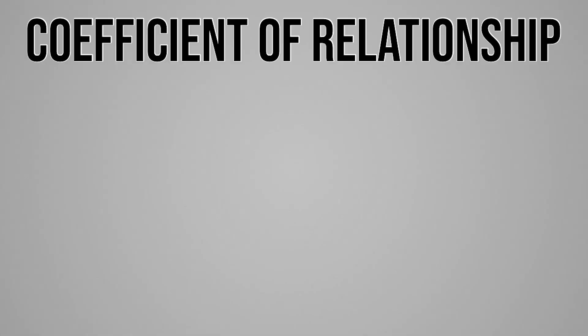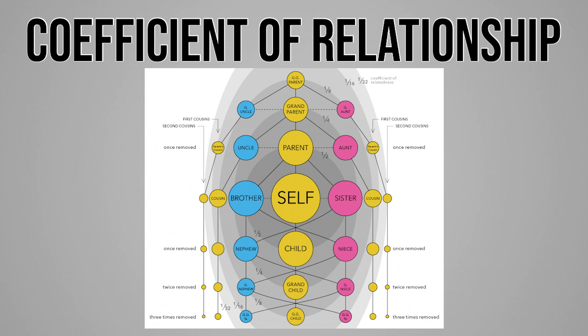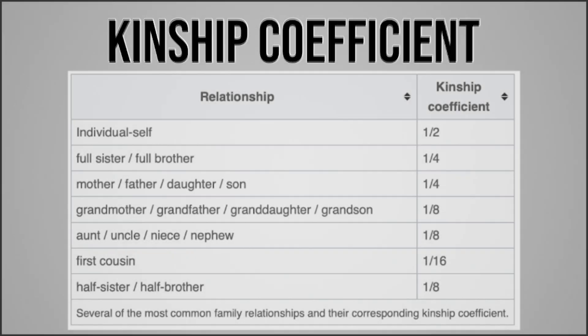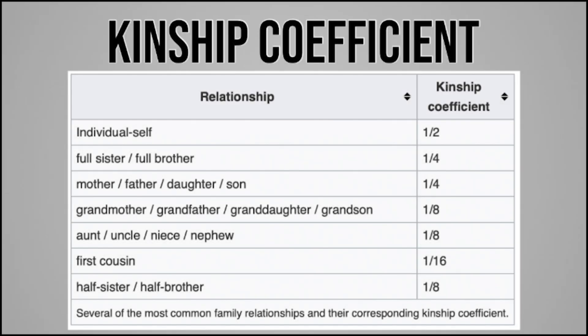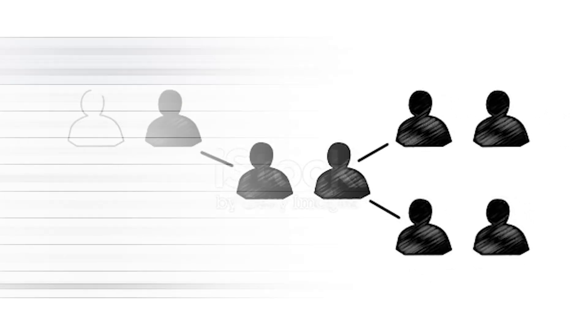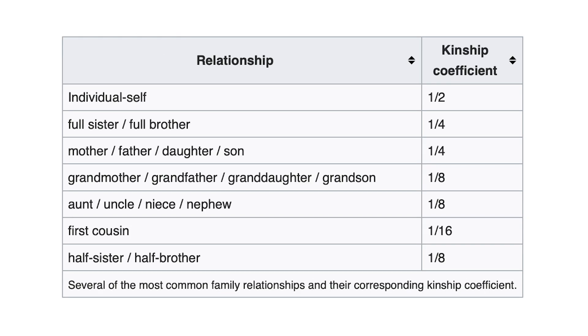There are two components to the consanguinity coefficient. The first is the coefficient of relationship, which is specific to an individual. The second component is the kinship coefficient, which works out the relatedness of someone due to their ancestry. We're going to be using this component for the theory, as it takes into account the relationship of the parents and their ancestors. Let me now break down this table, which you can find online, to explain how different pairings would produce different levels of inbreeding.